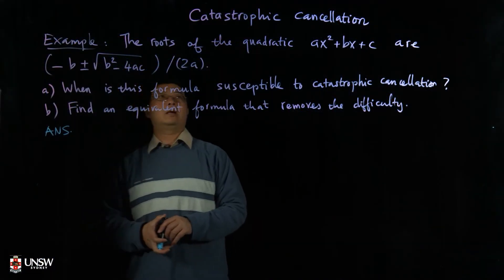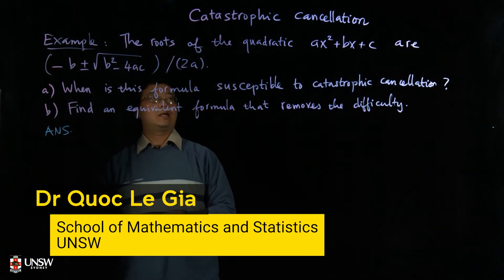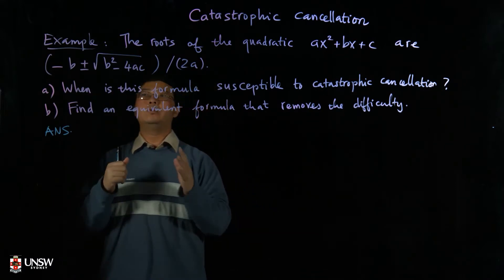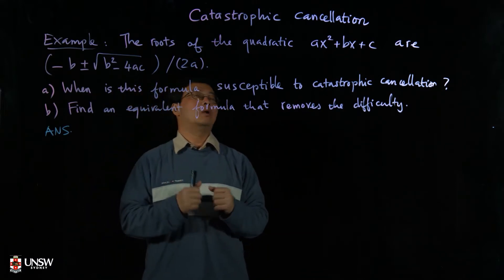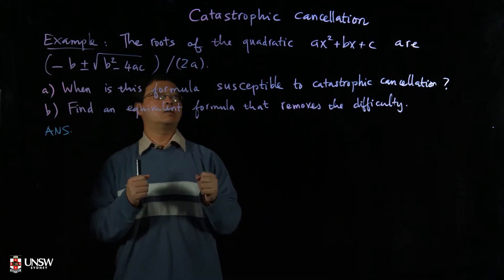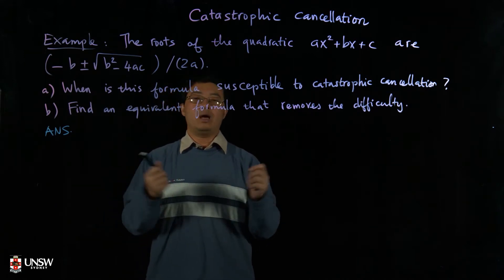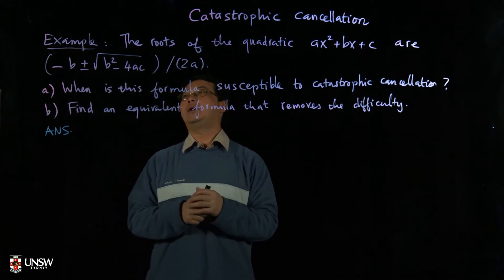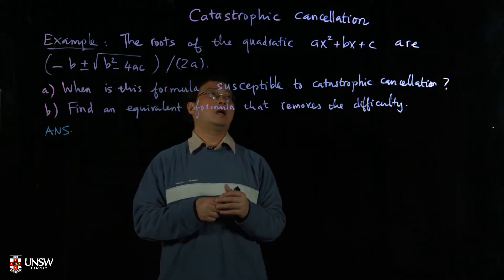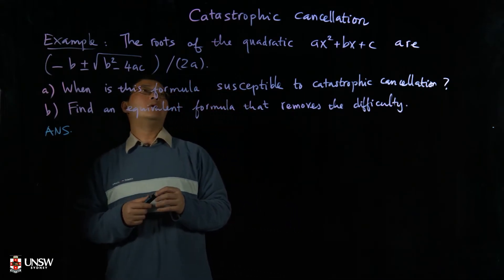We are going to talk about catastrophic cancellation. Catastrophic cancellation is when you take two real numbers in the floating-point number system and subtract them from each other — the relative errors can be very big. That is what is called catastrophic cancellation.